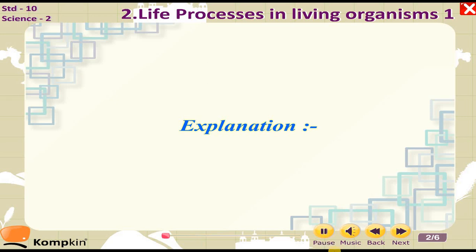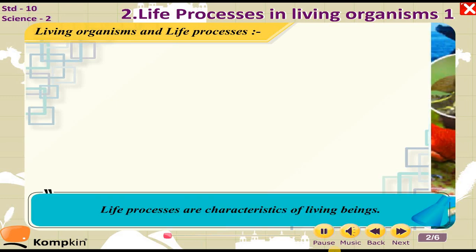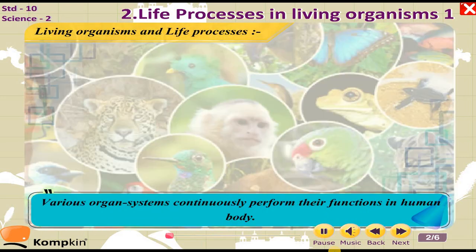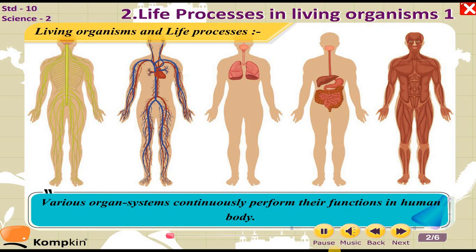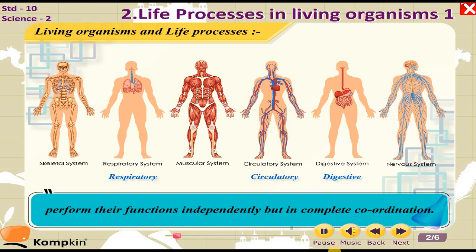Life processes are characteristics of living beings. Various organ systems continuously perform their functions in the human body. Along with various systems like digestive, respiratory, circulatory, excretory, and control systems, different external and internal organs perform their functions independently but in complete coordination.